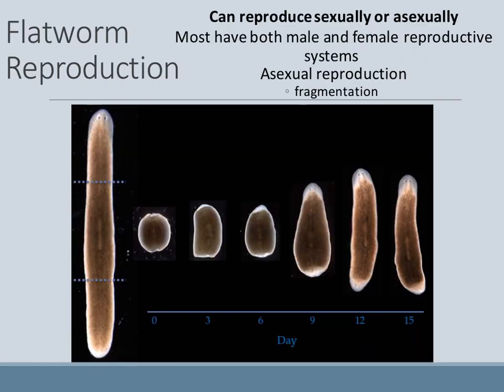Flatworms can reproduce both asexually and sexually, and most are going to have both male and female reproductive systems. What happens — and you'll see this in a video clip later — is they basically fight over who's going to be the female, because the female will have to take care of the offspring. They do a thing called penis fencing, where whoever gets to inject sperm into the other is the male, and the one that got injected is the female, who is left to raise the offspring.